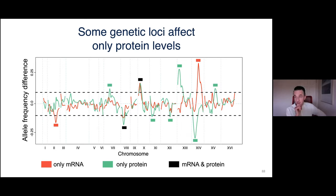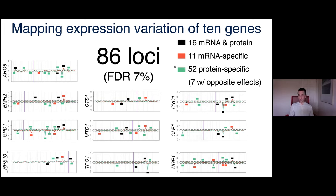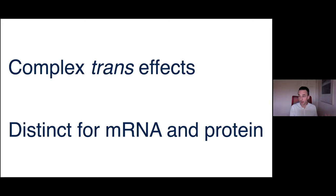Trans effects are still genetically complex, coming from all over the genome, and they really are quantitatively distinct for mRNA versus protein. The biological influences on protein abundance extend well beyond what's captured at the mRNA level.